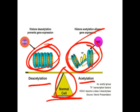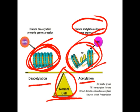Histone deacetylation causes the deacetylation of the histone, leading to uncoiling of DNA, which results in gene expression. Then histone acetylation takes place, which is responsible for coiling — and if coiling takes place, there is no gene expression. This is the normal process going on between histone deacetylation and histone acetylation in a normal cell.